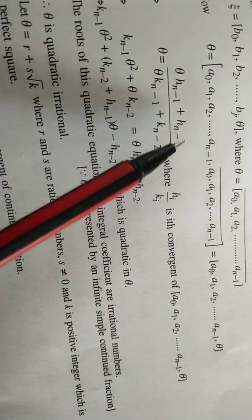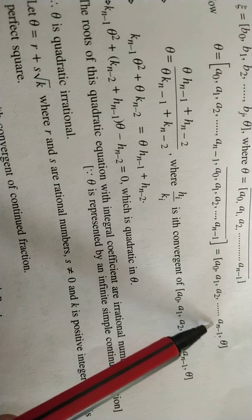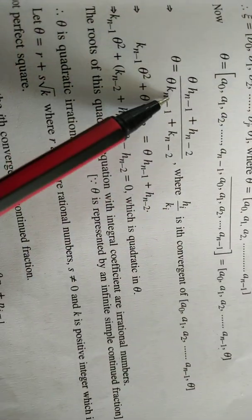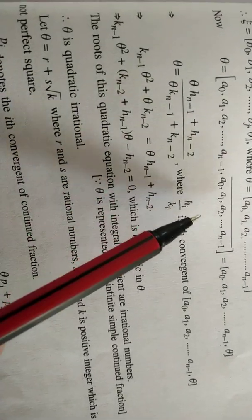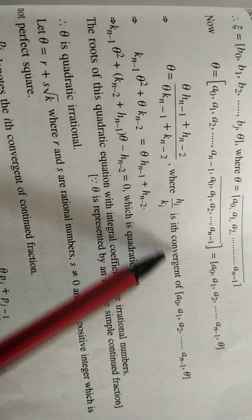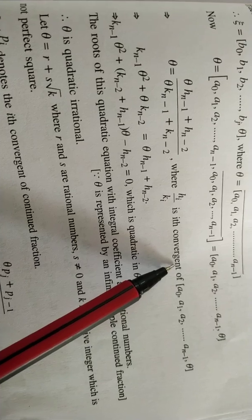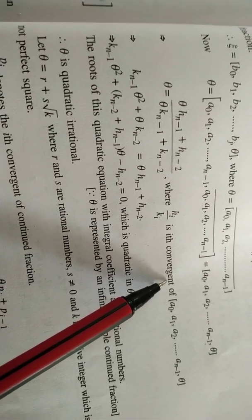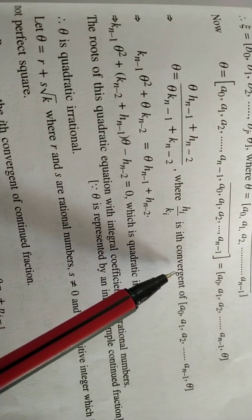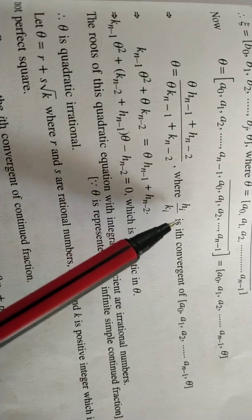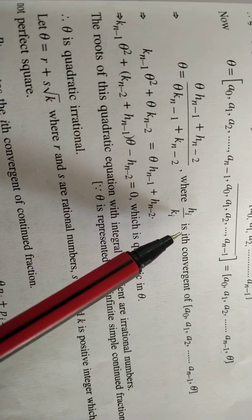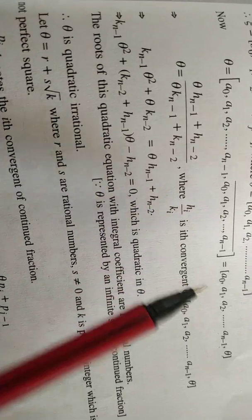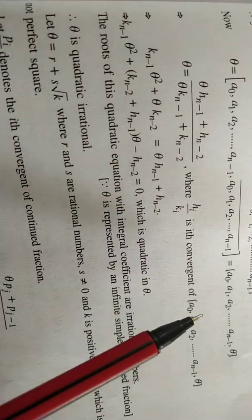We write the expression as (h_{n-1}·θ + h_{n-2}) / (k_{n-1}·θ + k_{n-2}), where h_i / k_i is called the i-th convergent. The first convergent involves a₀, a₁; the second convergent involves a₀, a₁, a₂, and so on. Cross multiplying gives a quadratic equation in θ: k_{n-1}·θ² + (k_{n-2} - h_{n-1})·θ - h_{n-2} = 0.